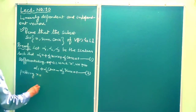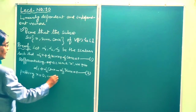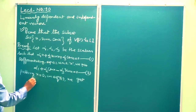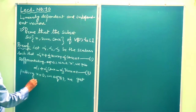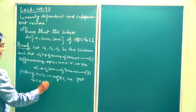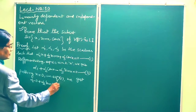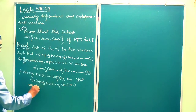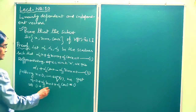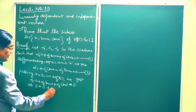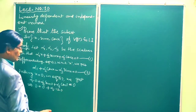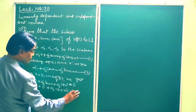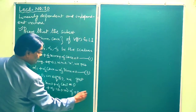Putting x = 0 in equation 1, we get α1·0 + α2·sin 0 + α3·cos 0 = 0. Since sin 0 = 0 and cos 0 = 1, this simplifies to α3·1 = 0, which implies α3 = 0. This is equation 3.